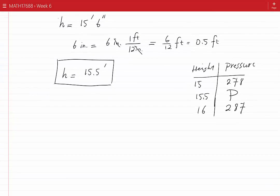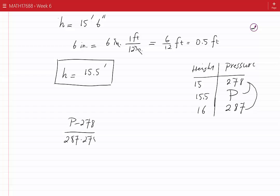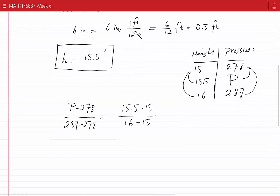Using the properties of similar triangles, we can write down such ratios. P minus 278 divided by 287 minus 278 equals 15.5 minus 15 divided by 16 minus 15. The right-hand side simplifies to 0.5 divided by 1.